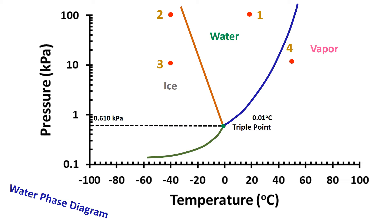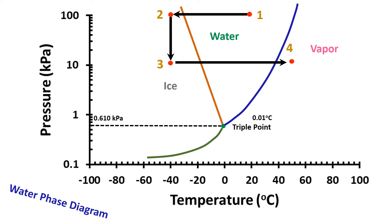We could consider scenario two. In this case, we want to dry at 10 kilopascal by freezing the sample at minus 40°C. First, cool the sample to minus 40°C — this is point 0.2. Then reduce the pressure to 10 kilopascal — this is point 0.3. Finally, start heating to 50°C for drying.